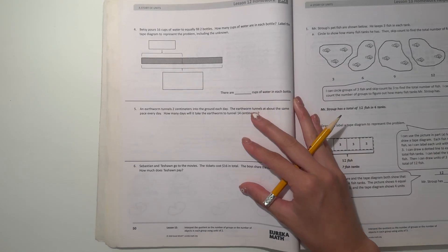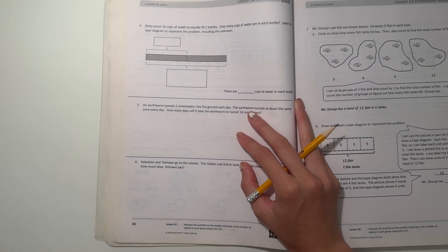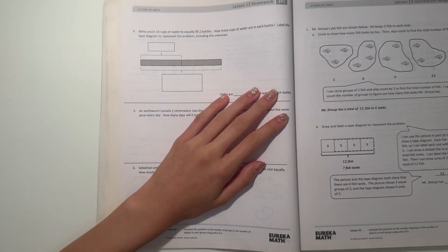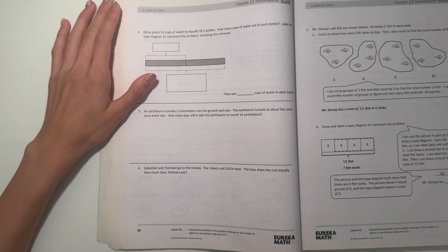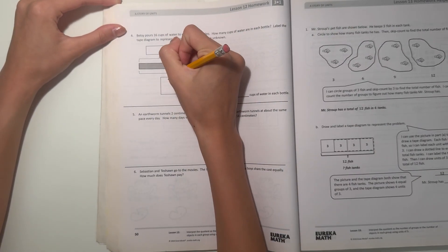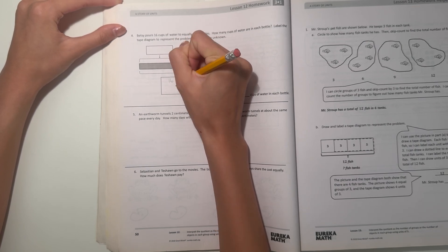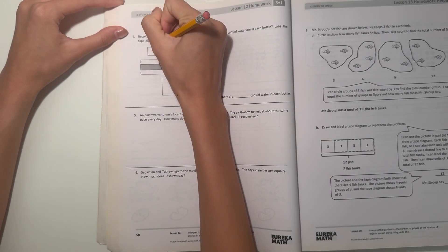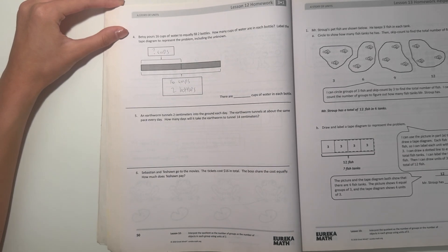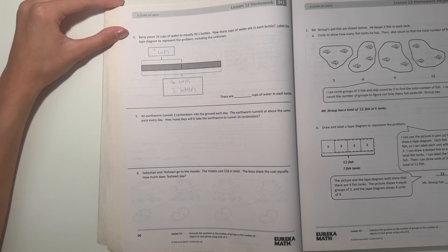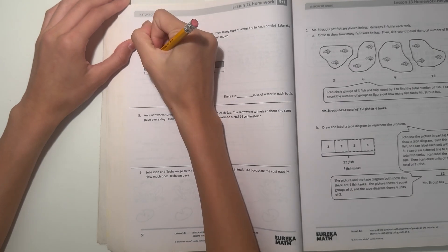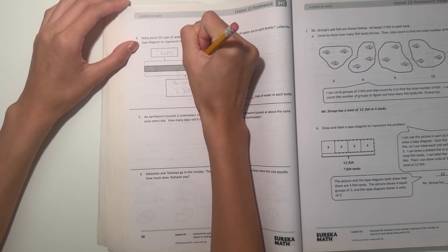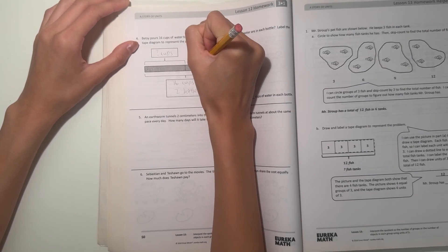Alright, so now it says, Betsy pours 16 cups of water to equally fill 2 bottles. How many cups of water are in each bottle? Label the tape diagram to represent the problem. So let's start. What do we know so far? In total, she pours 16 cups to fill 2 bottles. So now we have to find out how many cups in each bottle. So one way we can do this is to keep on drawing until we reach 16. Let's see. 1, 2, 3, 4, 5, 6, 7, 8, 9, 10, 11, 12, 13, 14.